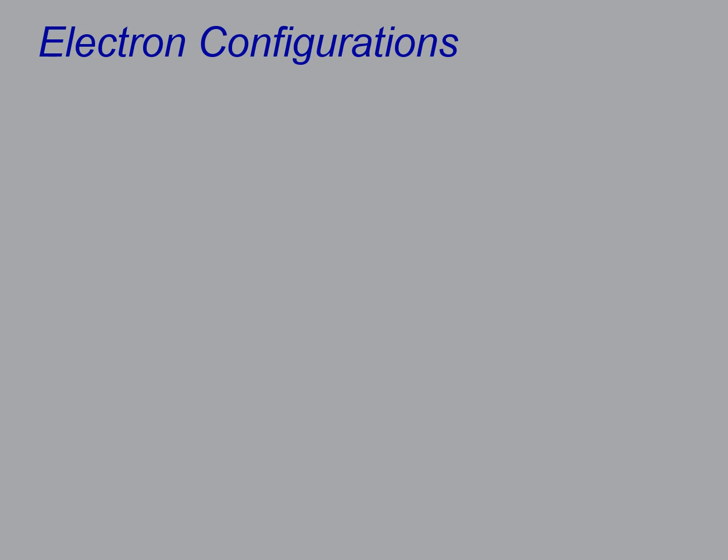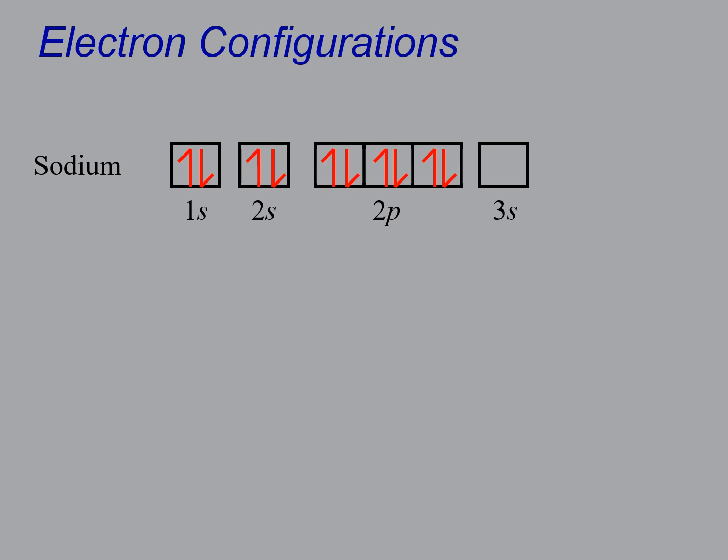All right. So let's do one more. So element number 11 is sodium. So the 1s states are full, the 2s states are full, the 2p states are all full. So the next one turns out to be 3s. You have one more electron to add. So there you go. And that gives you a configuration of 1s2 2s2 2p6 and 3s1.